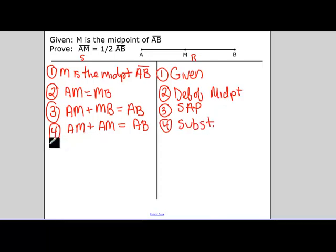And our reason there is substitution. Then step five. We're going to combine AM and AM to get 2AM. And I'm going to call that addition. We combine like terms.